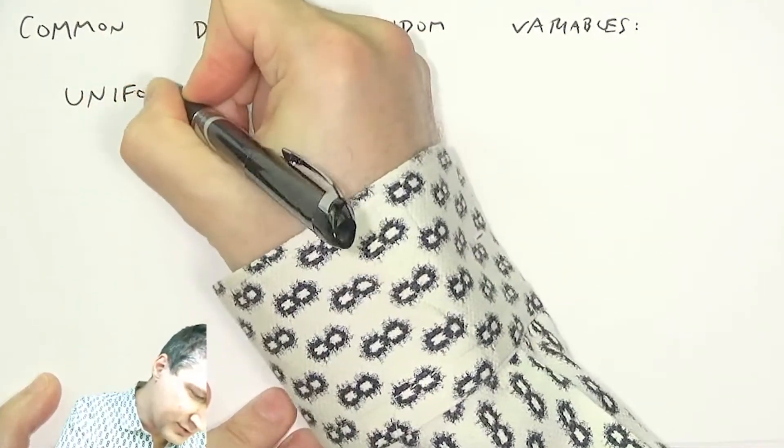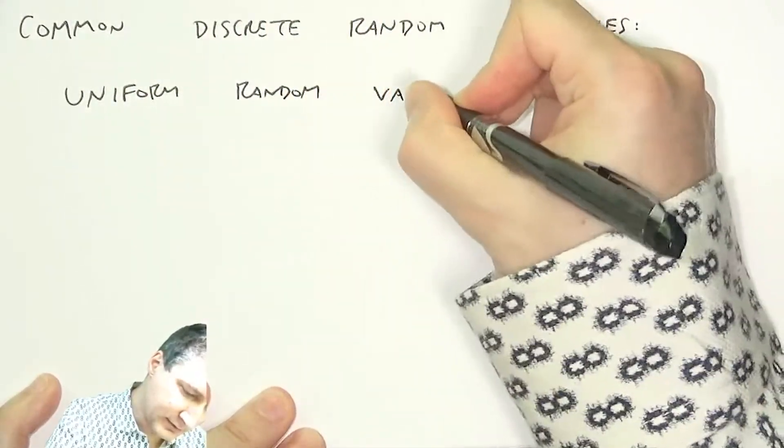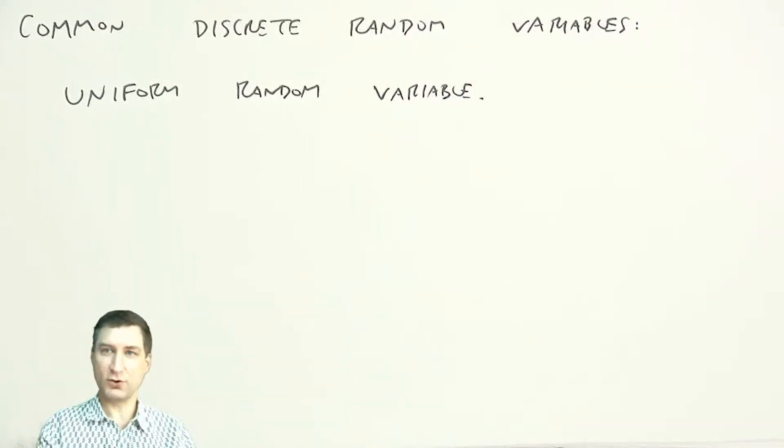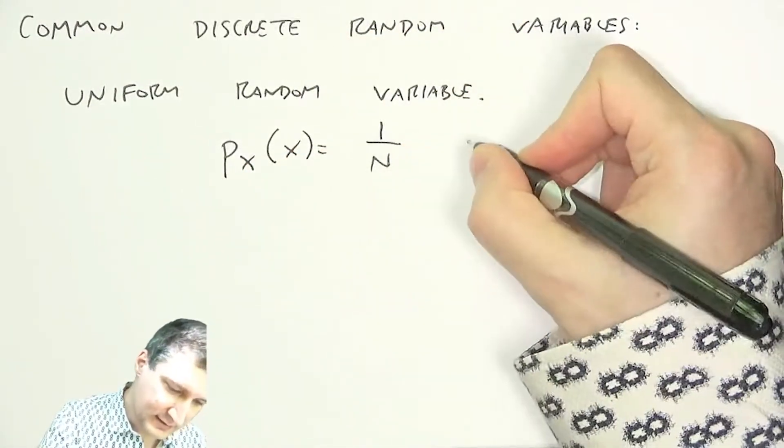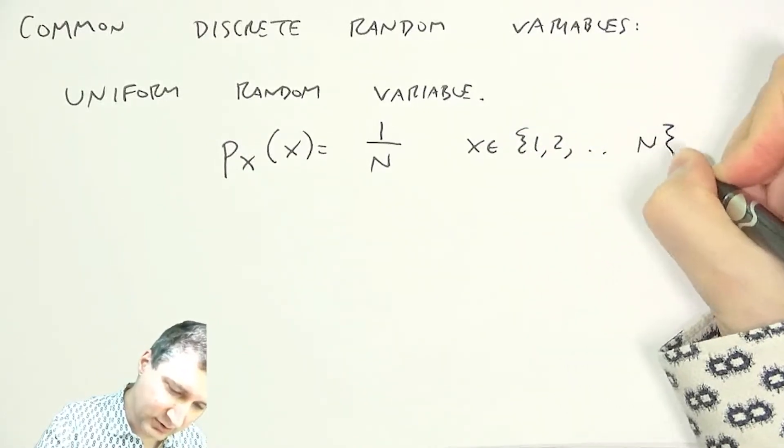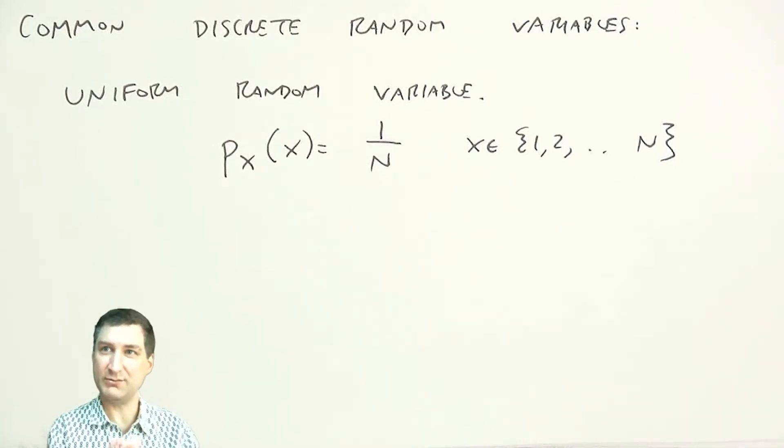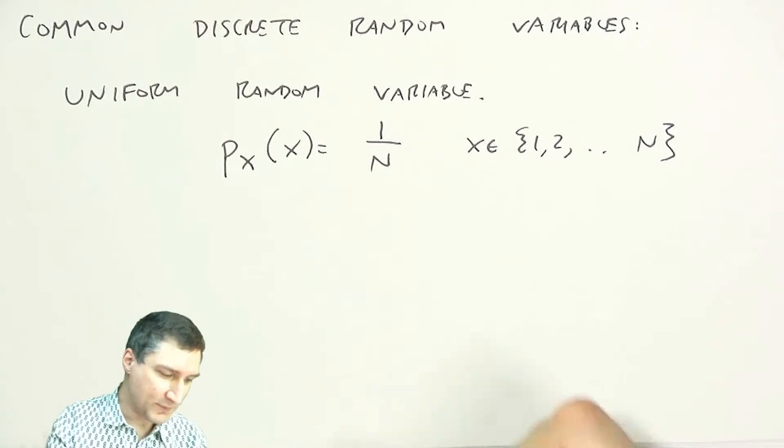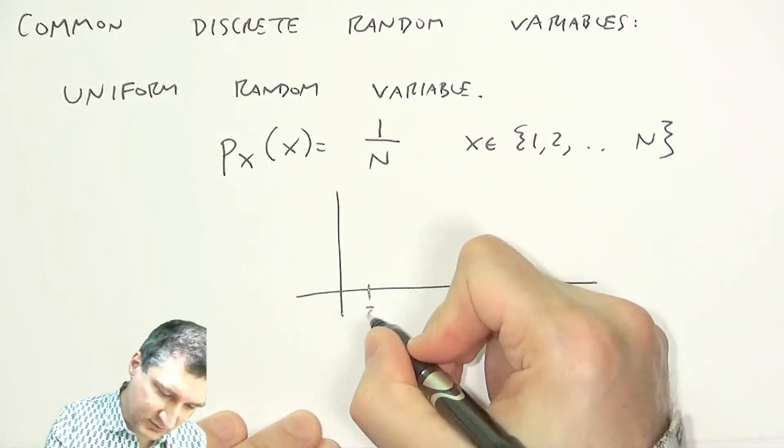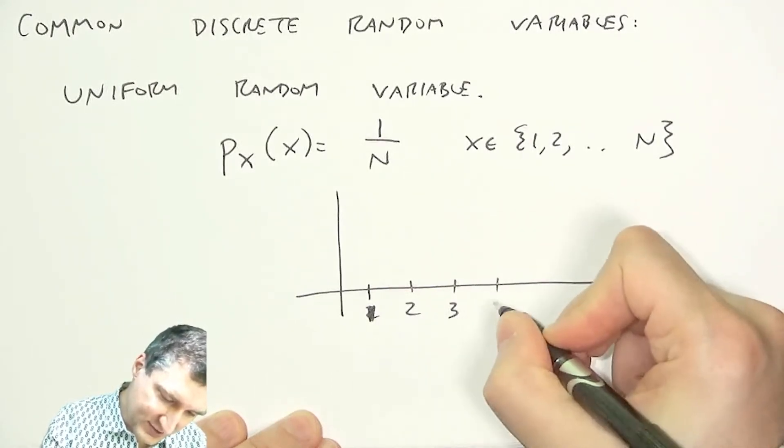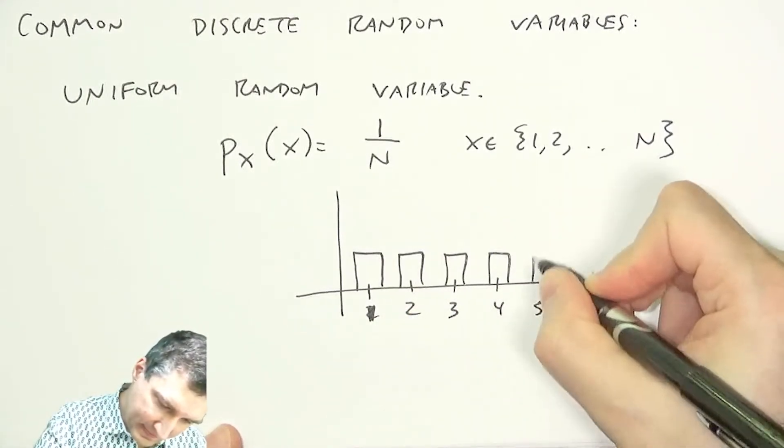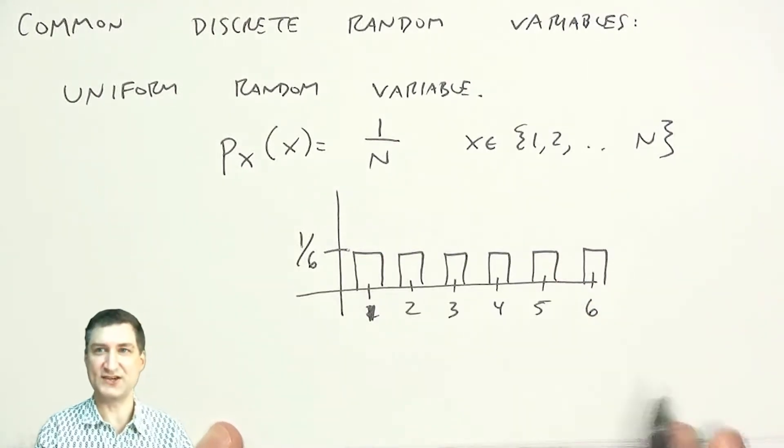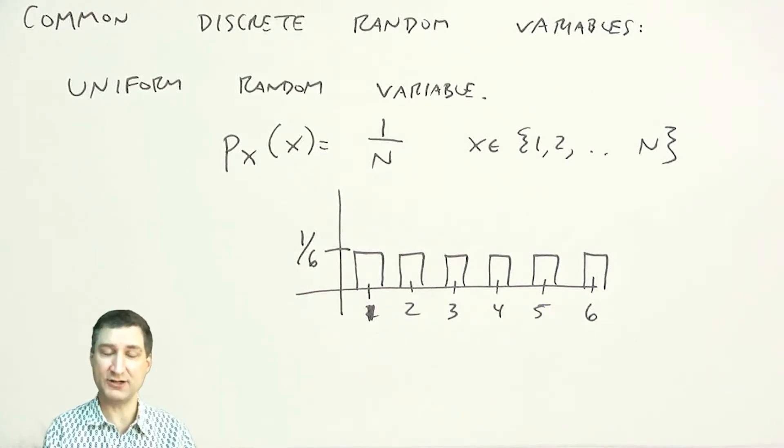So, one really important one is called the uniform random variable, and this is just like rolling a die. That's like saying that I have N outcomes, and each of those has probability 1 over N. This is like rolling a fair die and looking at the numbers 1 through 6, and each of those has probability 1 sixth. So, one way of representing this is to draw a picture. These are my possible numerical outcomes, and what I could do is I could draw these like bars on a bar graph, and each of these bars has height 1/6. So, this is kind of like a bar graph or like a histogram of how often these outcomes happen.